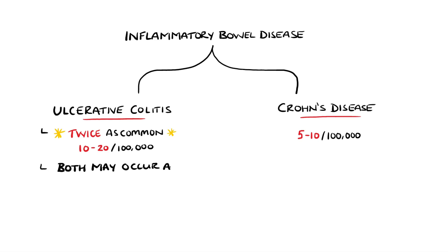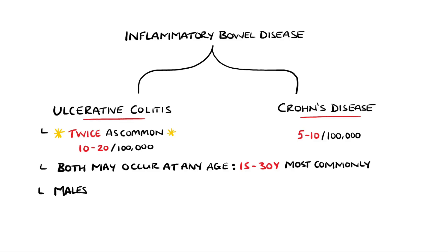Both can happen at any age, although most commonly they are both diagnosed in the age range of 15-30 years. On average, Crohn's disease is found a few years before ulcerative colitis. Some studies show that ulcerative colitis is found more commonly in men, while Crohn's disease is more common in females.